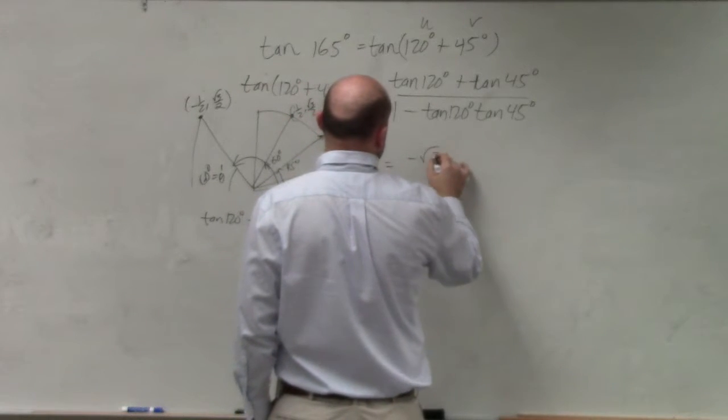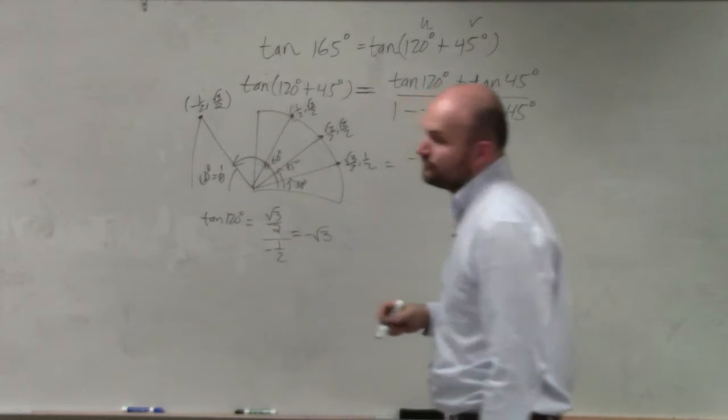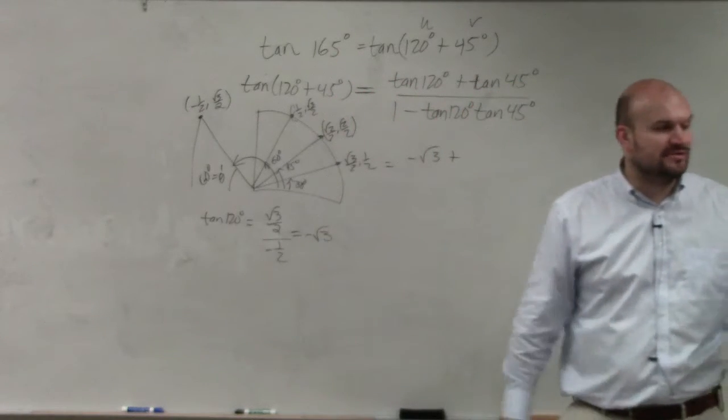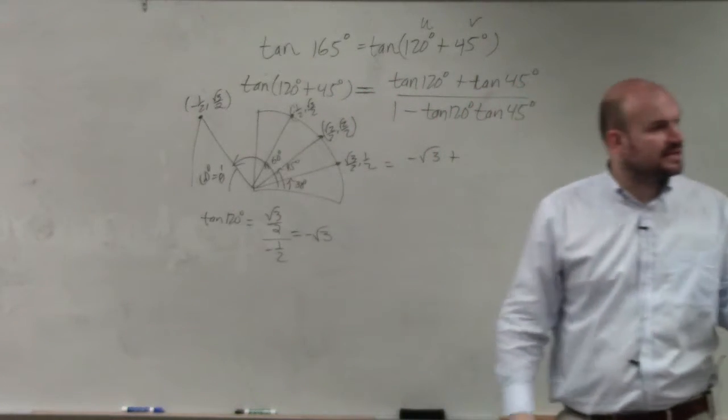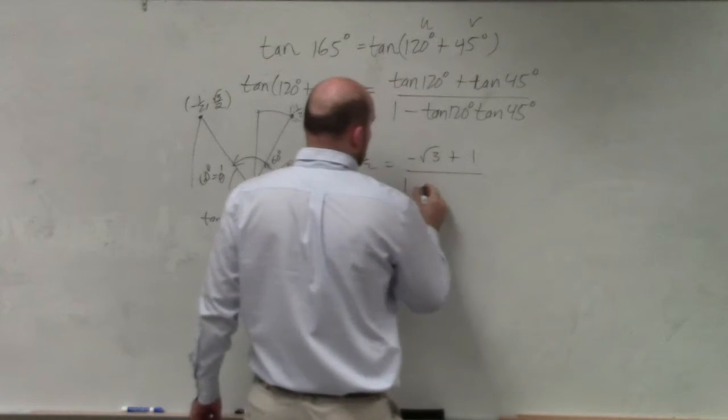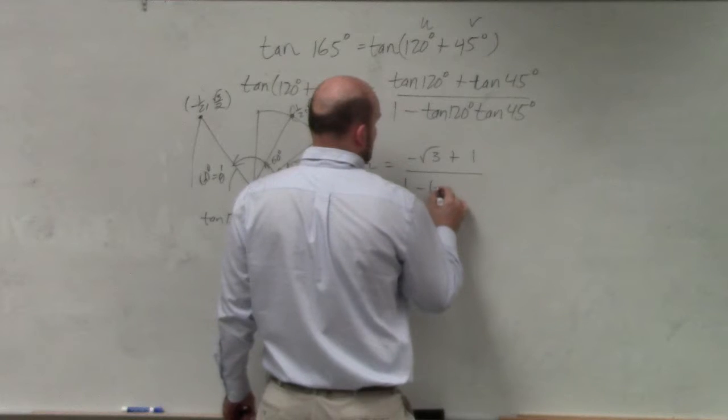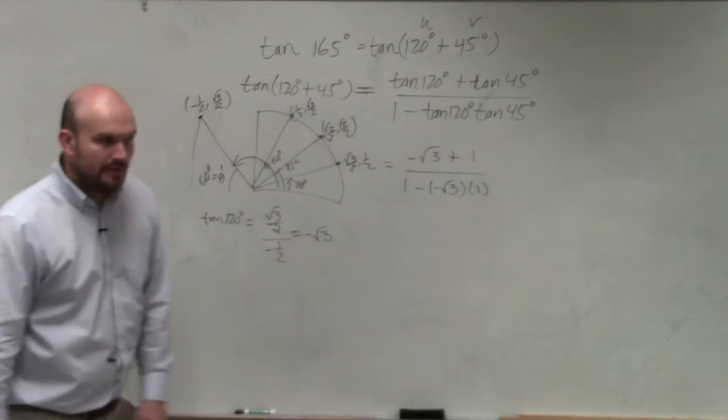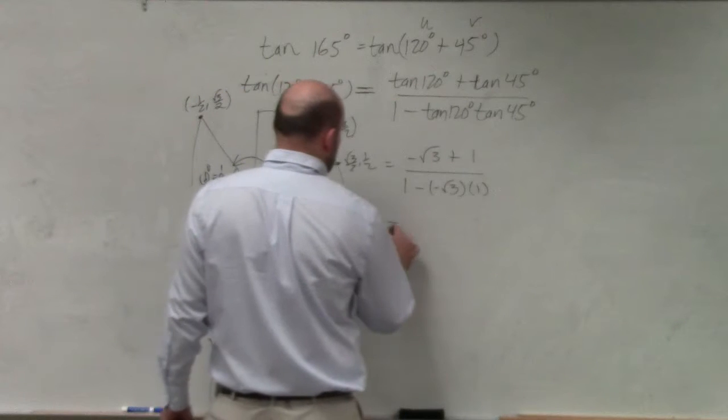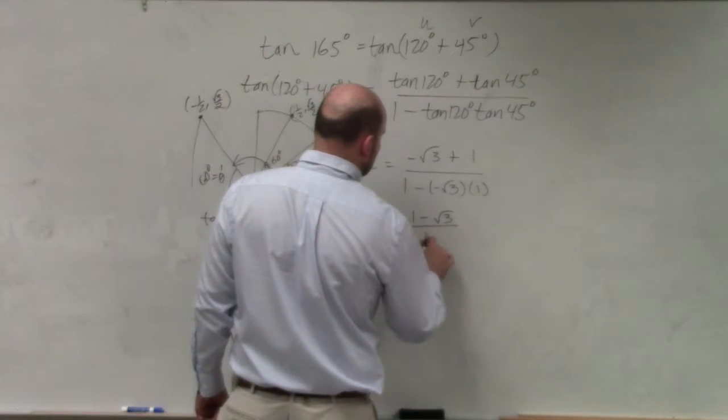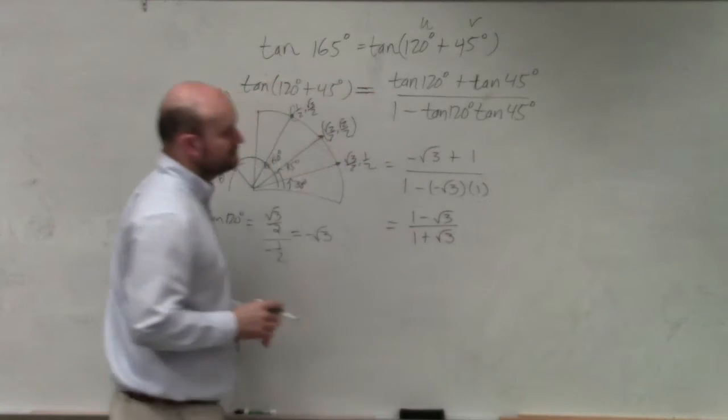So I have negative square root of 3 plus the tangent of 45 degrees. Guys, any time you have a number divided by itself, it's always going to equal 1. So that's going to be plus 1 divided by 1 minus negative square root of 3 times 1. All right? Let's go ahead and simplify this. Let's rewrite this as 1 minus square root of 3 all over 1 plus square root of 3. OK?